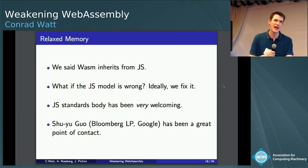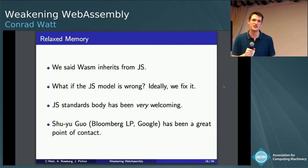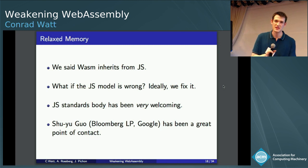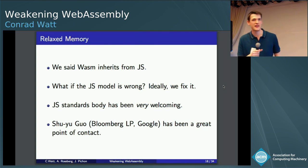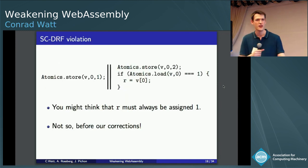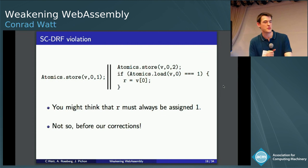So I said that WebAssembly is inheriting these bits of the model from JavaScript. But what if JavaScript just does something wrong? In that case, we actually probably want to go back and fix the JavaScript model, and then both models can be correct. So actually, JavaScript standards body has worked with us very well on this. We found some mistakes in the model. And I really have to, in particular, thank Shu-yu Guo, who's been a great point of contact in helping us to push these fixes through JavaScript standardization process.